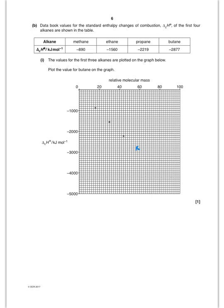So now we're going to plot these values. They've done the first three and I've marked the point for butane. And what you would then do is you would draw a straight line through those points.